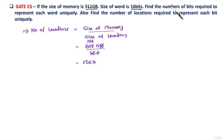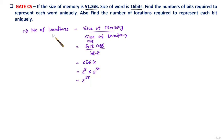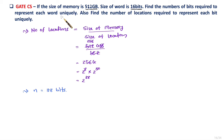To identify the number of bits, we need this in the form of 2 to the power N. 256 means 2 to the power 8, and G means 2 to the power 30. So in total, there are 2 to the power 38 locations. So 38 bits are required to represent each word uniquely.